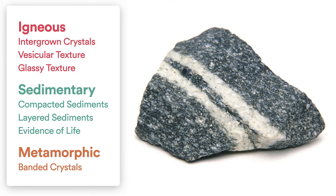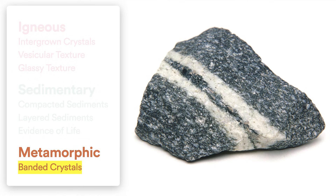Speaking of metamorphic, here's an example of the rock gneiss, which is metamorphic because it has banded crystals. Now, this might be a little trickier because the layers — the bands — are horizontal and not distorted at all. But what tells me it's metamorphic is that it's very crystallized, and that's going to occur as a result of the metamorphic heat and pressure that takes place deep within the earth.